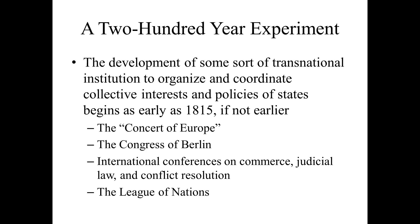The readings also make note that the UN isn't necessarily something unique. Granted, it has a lot more power, influence, and global reach than anything before it. But the United Nations is, in so many words, the culmination of a 200-year experiment in international institutionalism — some kind of regional organization, not necessarily global, but the development of some kind of transnational institution to organize and coordinate collective interests and policies of states, even if these states are no more than 10 to 15, really beginning as early as 1815.